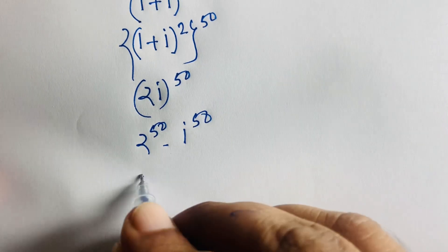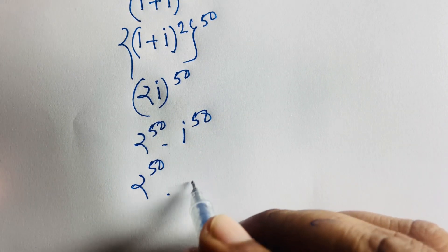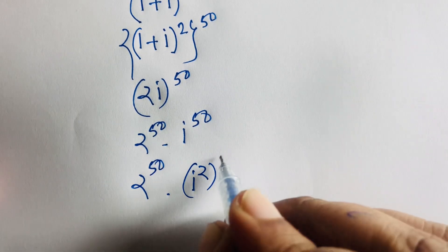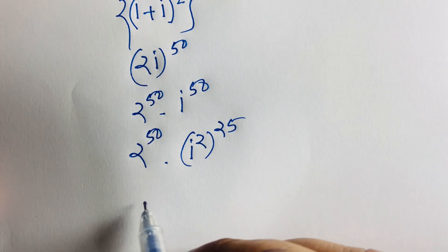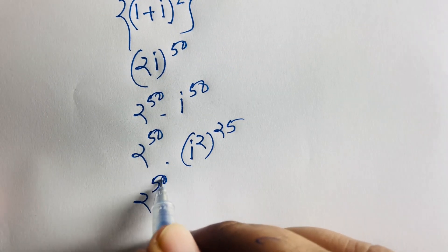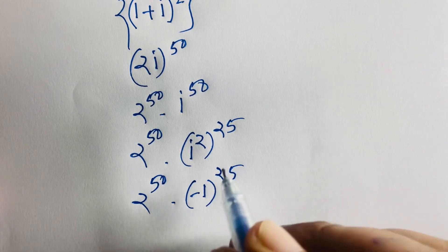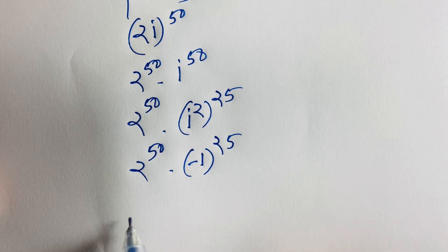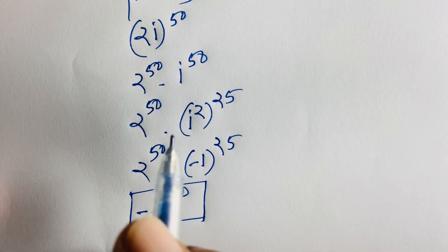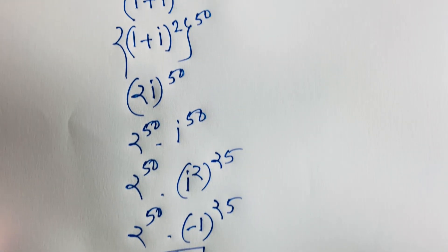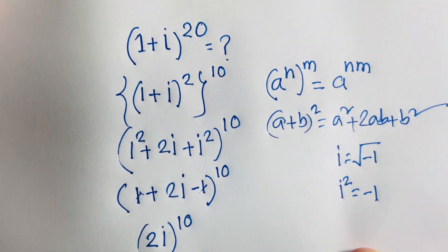For i^50, I rewrite it as (i^2)^25 since 2 times 25 is 50. Then i^2 = -1, so (-1)^25 = -1 because 25 is an odd number. Therefore the final answer is -2^50. If you enjoyed this video please subscribe to my channel and like this video. Goodbye, take care.